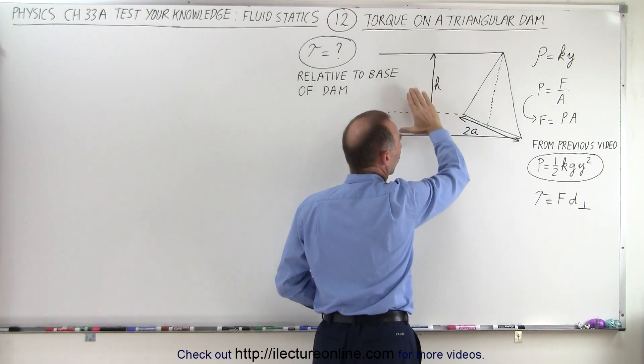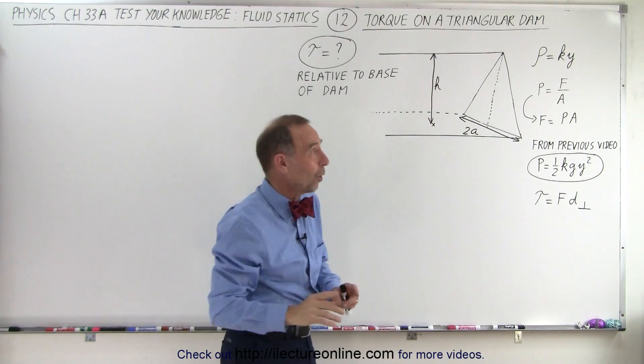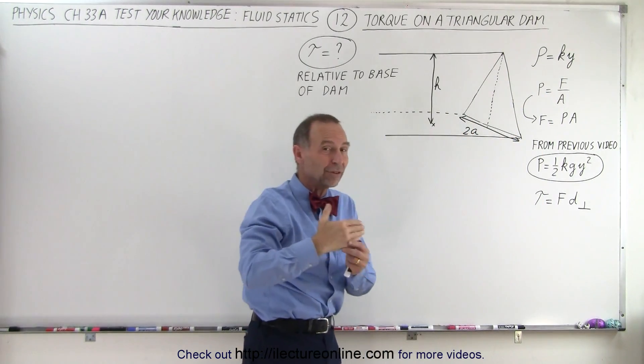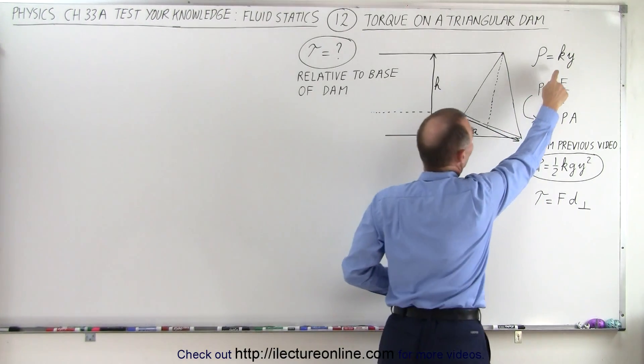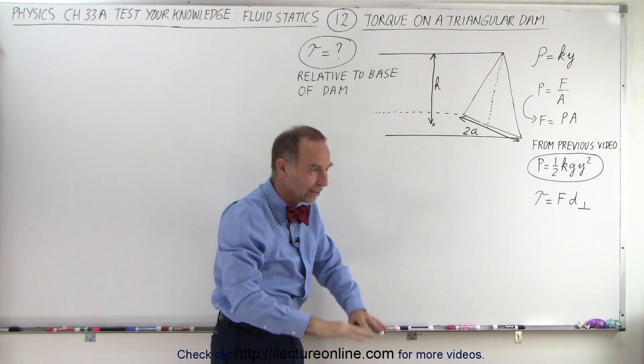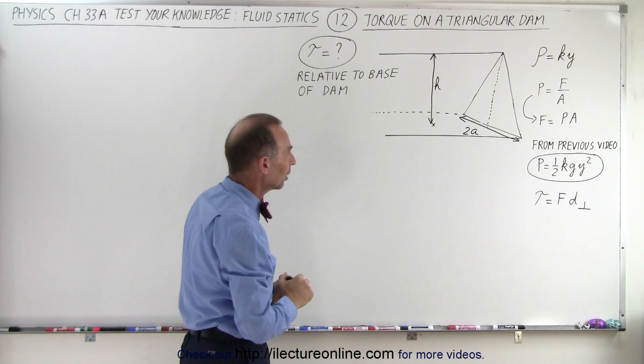So all this water, or whatever the liquid is, because it's not water, it's going to have the same density as what we found in the previous video. It's going to be not a constant density, but k times y, so the liquid gets more dense as you go down, further down into the liquid.